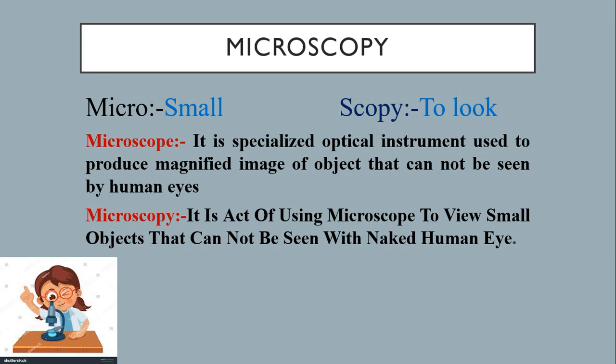What is microscope? It is an optical instrument or it is a device which is used to magnify the object which cannot be seen by human eyes. Just now I have given you the example of coronavirus.